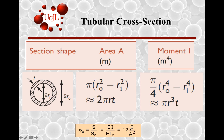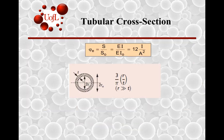For the tubular cross-section, what you get is 3/π times r divided by t, provided that the radius is very much bigger than the thickness of the tube.